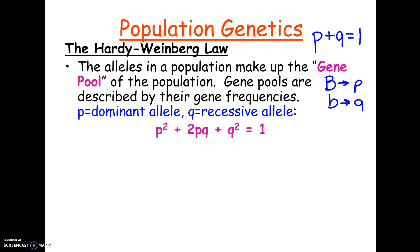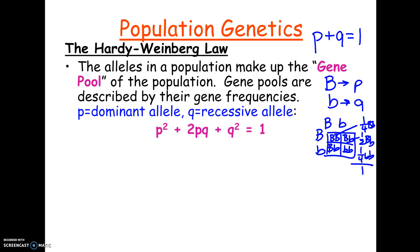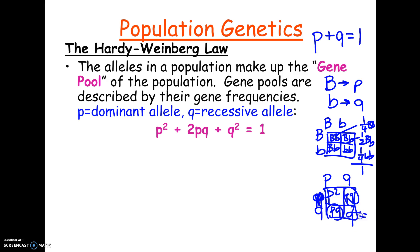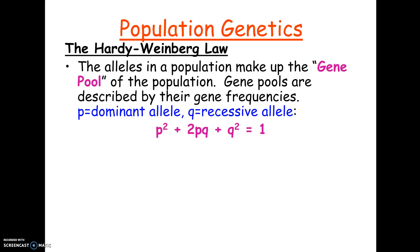There's also a formula: P² + 2pq + Q² = 1. If we cross big B little b with big B little b, we get big B big B, big B little b, big B little b, and little b little b — one quarter big B big B, two quarters big B little b, one quarter little b little b. Add those up and they equal one. Replace the B's with P and Q and you get P² + 2pq + Q², and their frequencies add up to one.